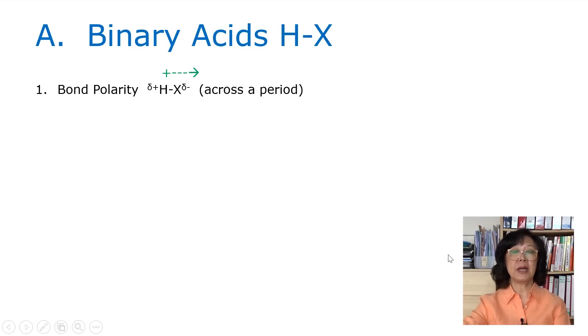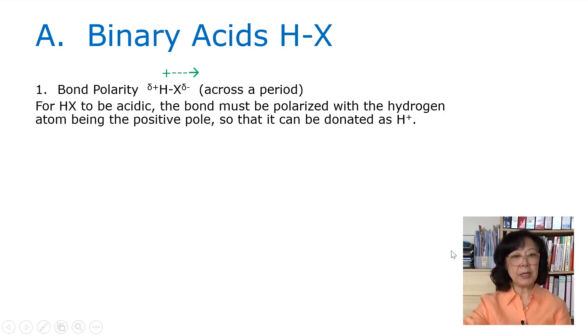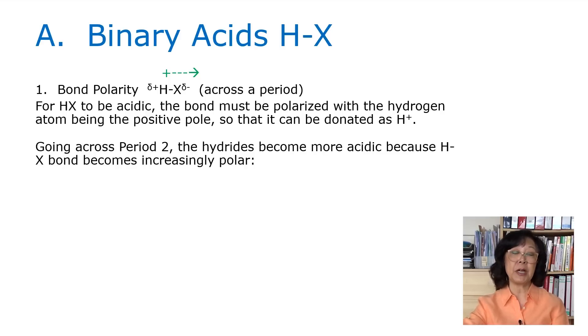When we compare the acid strength across the period, we're looking for bond polarity. For HX to be acidic, the bond must be polarized with the hydrogen atom being the positive pole so that it can be donated as H+ ion. When we go across period II, the hydrides become increasingly acidic because the HX bond becomes increasingly polar. For example, if we take lithium hydride, the negative end is on the H while the positive end is on the Li. Such H is not the acidic proton. The bond is ionic and the substance itself is not acidic.